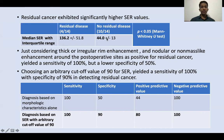Considering only morphological characteristics — such as thick or irregular rim enhancement, nodular or mass, or non-mass-like enhancement around the operative sites — as positive for residual cancer yielded a sensitivity of 100% and a specificity of 50%. However, using SER as a diagnostic criterion with an arbitrary cutoff value of 90 yielded a similar sensitivity of 100% but a higher specificity of 90% and a higher positive predictive value of 80%.